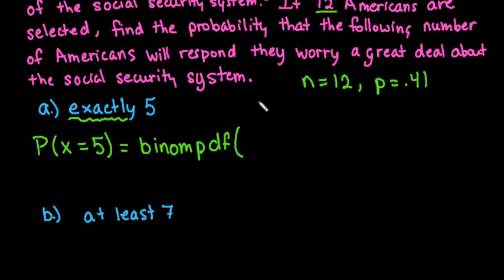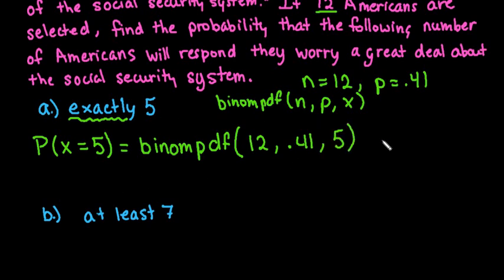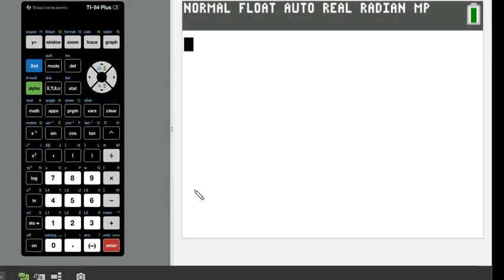When using binomPDF, it's always in the form n, p, x. In this case we put in 12, 0.41, 5. To get there on the calculator, hit 2nd and the VARS key — above it says DISTR — which pulls up all the distributions.